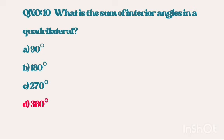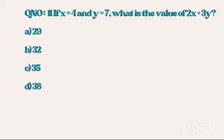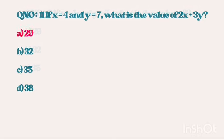Question number 11. If x is equal to 4 and y is equal to 7, what is the value of 2x plus 3y? The right answer is 29.